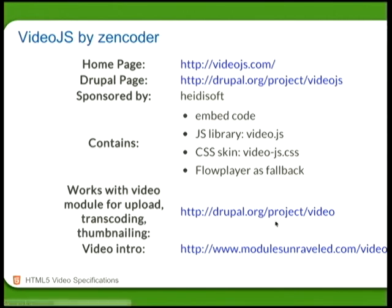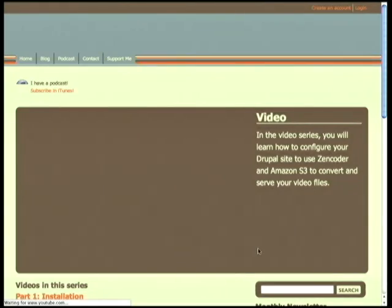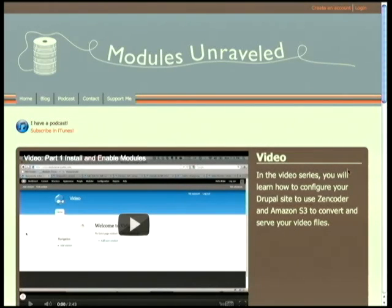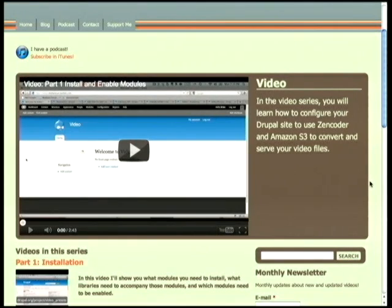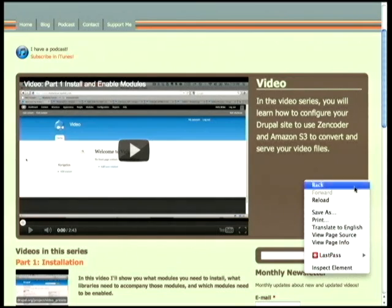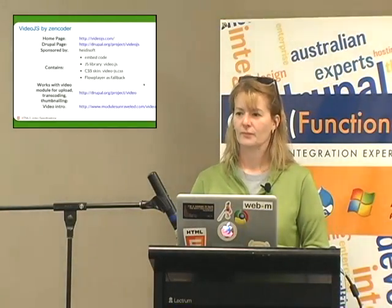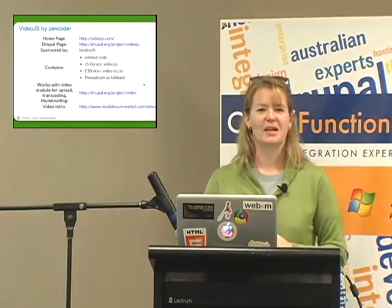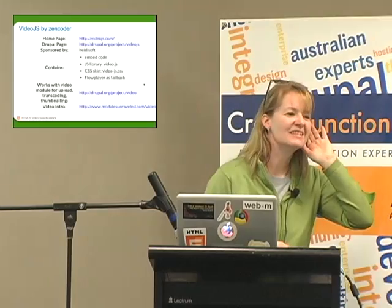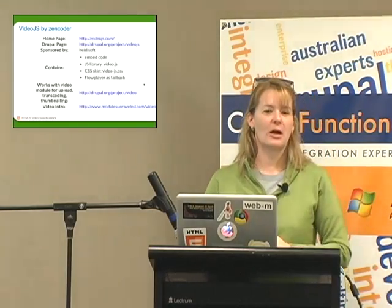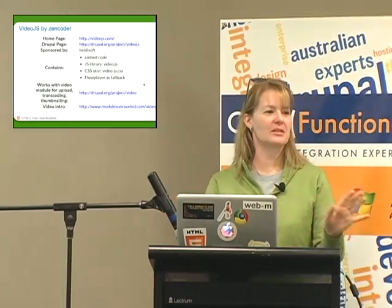What's really nice about Video.js is there's a whole series of videos explaining how to set it up and get it working — that's one of the easier things to use. There's also the JW player, which was originally a Flash player and later added HTML5 support — it does both Flash and HTML5, and works with the video module. I'm not too sure how well it works with HTML5 since it wasn't particularly written for HTML5, but it seems to work fine.